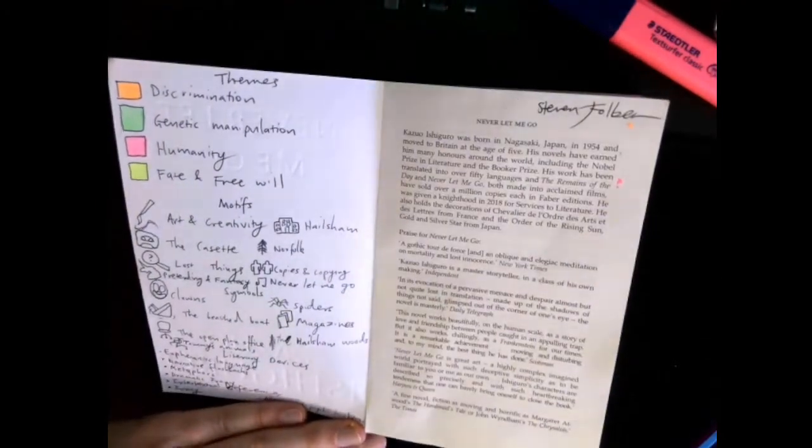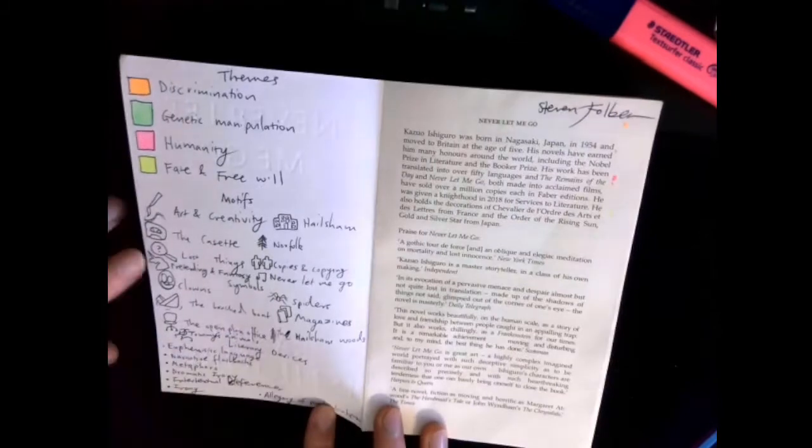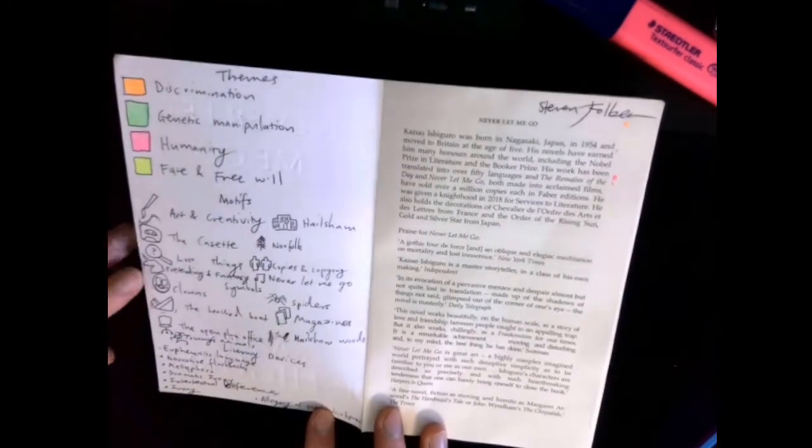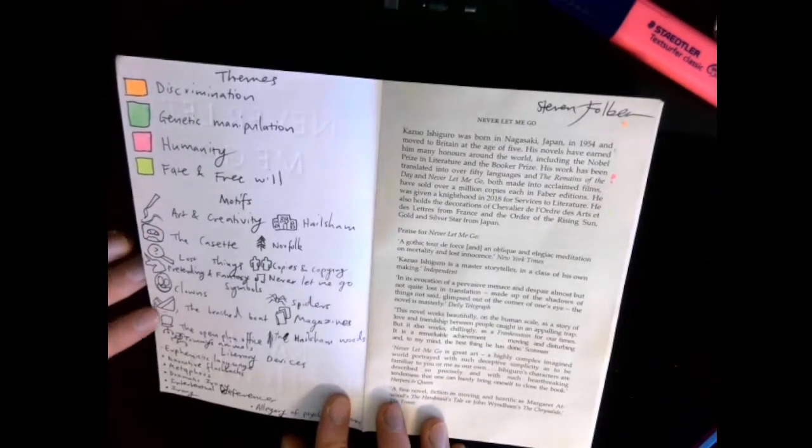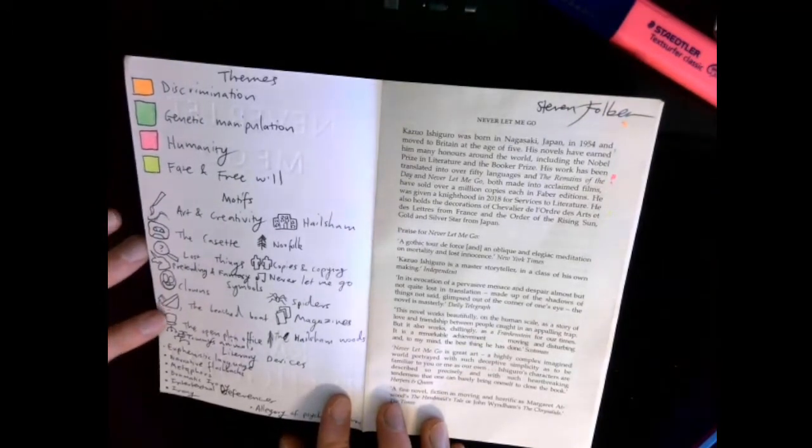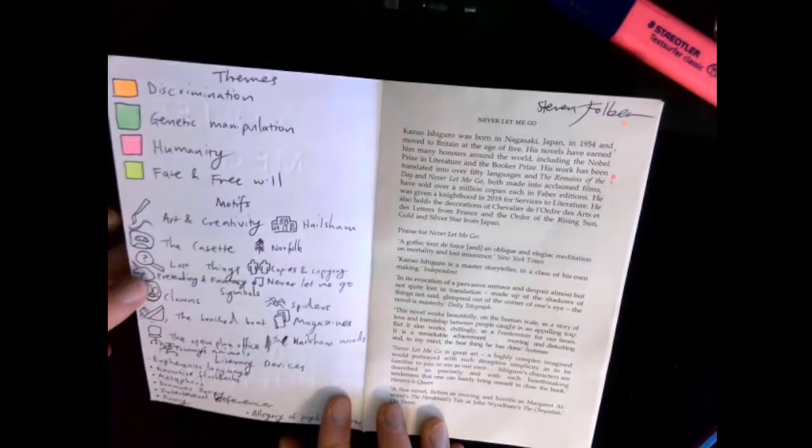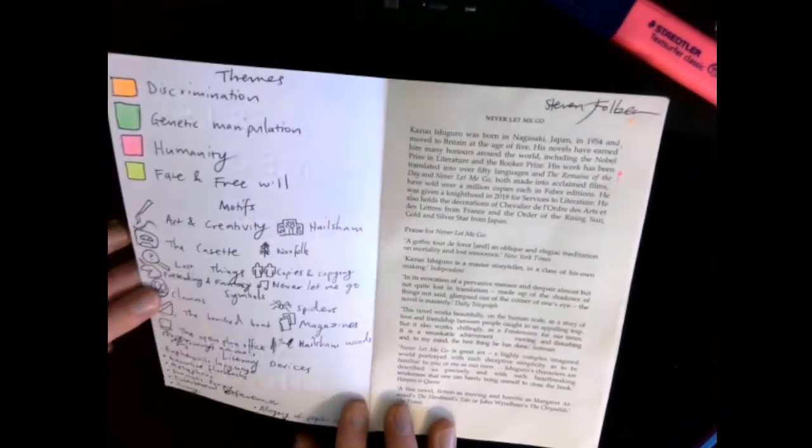We might talk briefly about the symbols. So we've got clowns, the beached boat, magazines, spiders, the Hailsham woods, the open plan office and Tommy's animals. So these are all sort of short-lived things that mean something important when you get to them. So these are just sort of my hints to look out for these things, I guess.